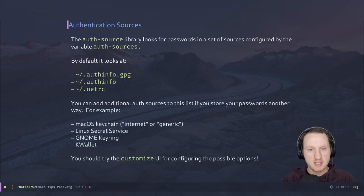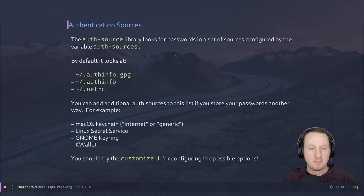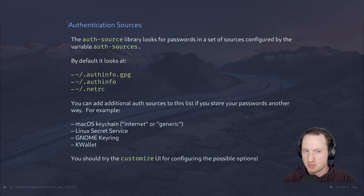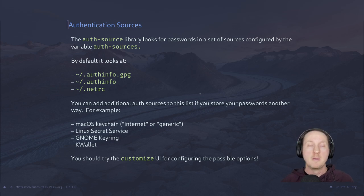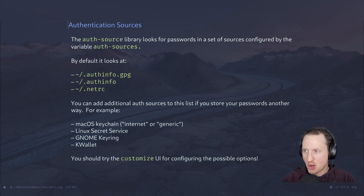If you've never heard of this before, there is a library called auth-source in Emacs. What it does is provide a way to have various different authentication sources — basically different backends for getting information about a username and a password for a particular service. They can come from different places.